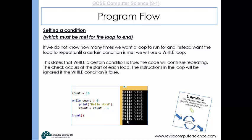Count will be nine, which is still greater than zero, so it prints hello world. We subtract one from count, making it eight. Eight is greater than zero, so it prints hello world again. This continues until count is no longer greater than zero, and then the loop ends.